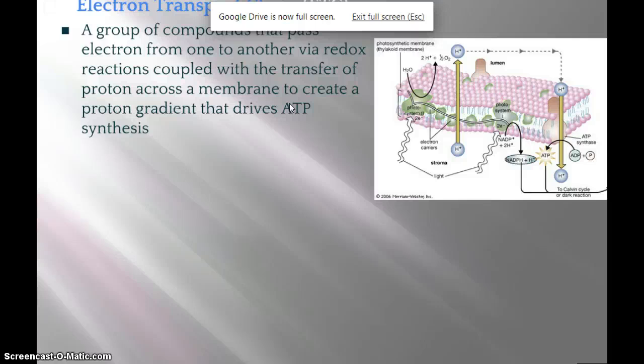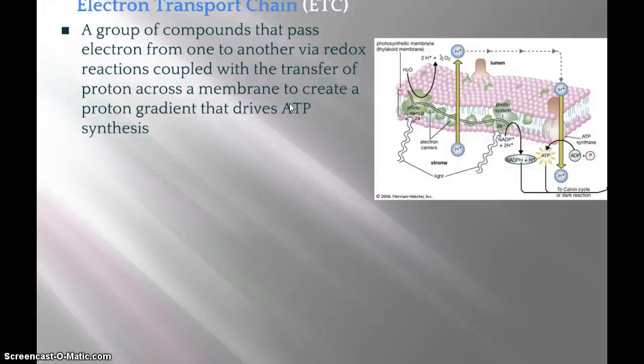The electron transport chain is a group of compounds — usually enzymes — that pass electrons from one to another through a redox reaction, coupled with the transfer of protons across the membrane. As electrons, which are negatively charged, travel along this path, they pull some protons — positively charged hydrogen ions — into the inner thylakoid space.